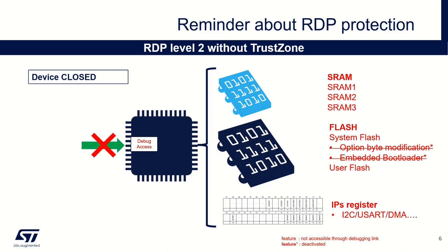In RDP level 2 without TrustZone, your device is somehow closed. The debug access is deactivated, so you can't access anymore from this link any resources of your target. Additionally, the option byte modification is no more possible, even from the embedded software. And the embedded bootloader cannot be activated, meaning you can only boot from flash.